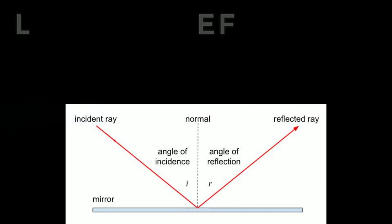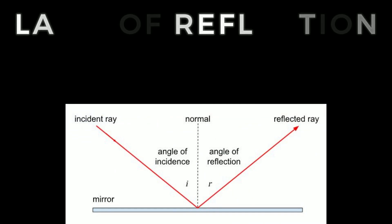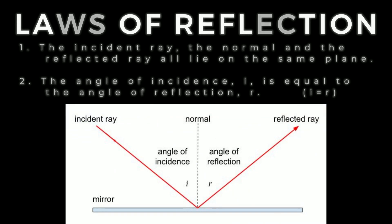So we have two laws of reflection to consider ourselves with. We need to say that the incident ray, the normal, and the reflected ray all lie on the same plane. So what that means is that, for example, in the diagram before or the example, the ray didn't jump off the flat surface, it's just all on the same surface. And then secondly, that the angle of incidence is equal to the angle of reflection, making sure that that's always relative to the normal.